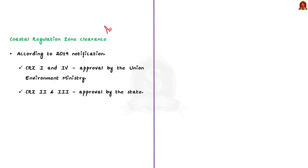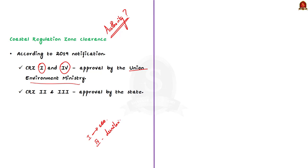According to the 2019 CRZ notification, the Ministry of Environment, Forest and Climate Change will oversee CRZ clearance only for CRZ 1 and CRZ 4. CRZ 1 includes ecologically vulnerable areas and CRZ 4 includes the area between the low tide line and 12 nautical miles seaward. For CRZ 2 and CRZ 3, the power of clearance has been delegated to the state level. Hopefully, you are now clear about the different zones and who has the authority to give CRZ clearance.